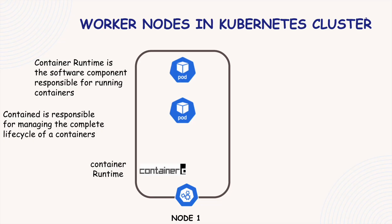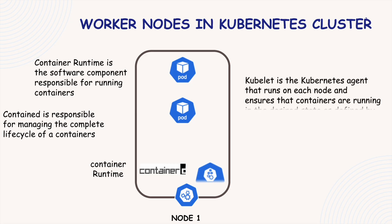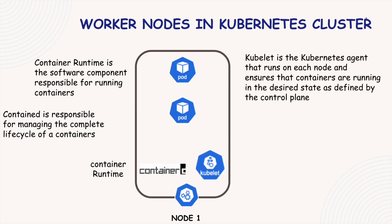The next important process that runs on every Kubernetes node is called Kubelet. While the container runtime is used to run containers, Kubelet is the core Kubernetes process that talks directly to the Kubernetes control plane. It is responsible for checking what needs to run on the node and making sure it actually happens. The Kubelet receives instructions like which pod to run, how many containers and what resources are needed, and then works with the container runtime to start those pods. It also allocates the necessary system resources like CPU, memory, and storage for each container running inside the pod.